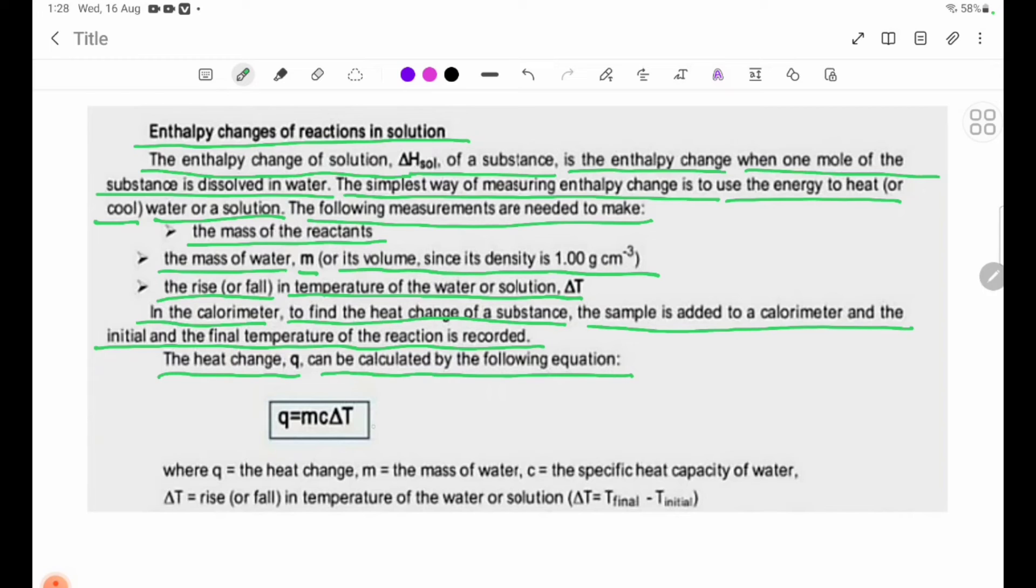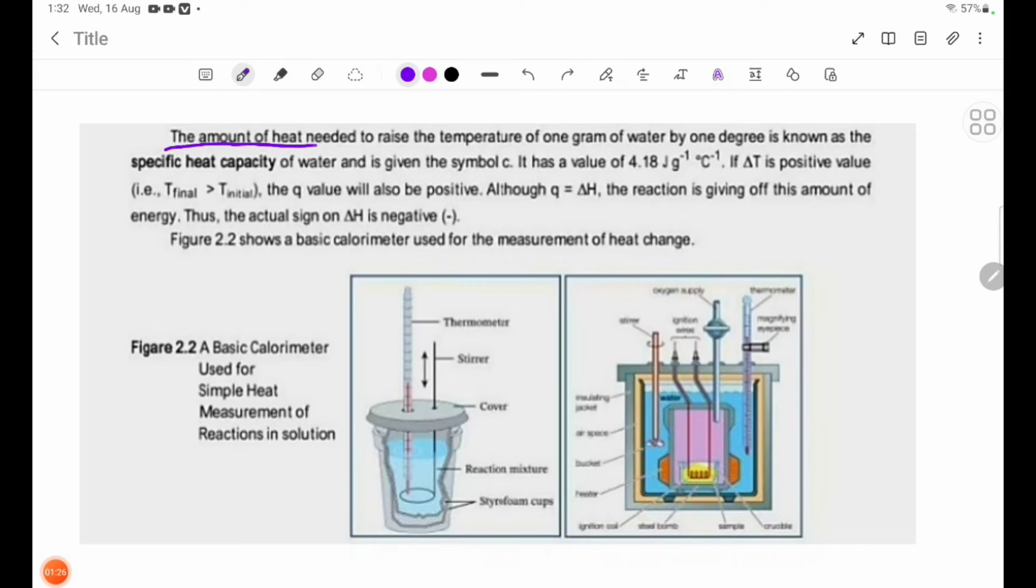The heat change Q can be calculated by the equation q equals mcΔT, where m is the mass of water, c is the specific heat capacity of water, and delta T is the rise or fall in temperature. The specific heat capacity of water has a value of 4.18 joules per gram degree Celsius.